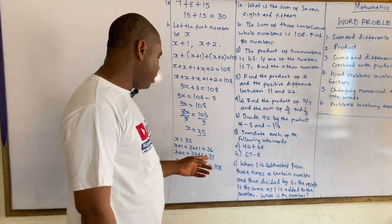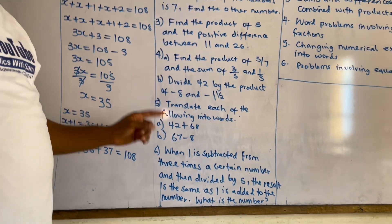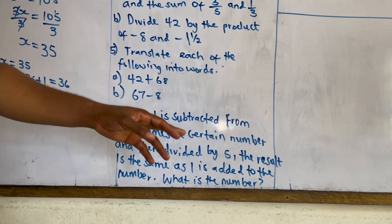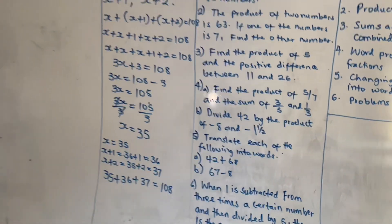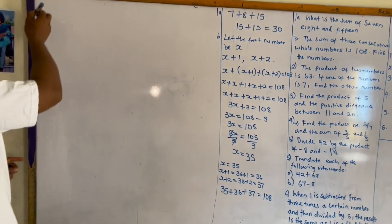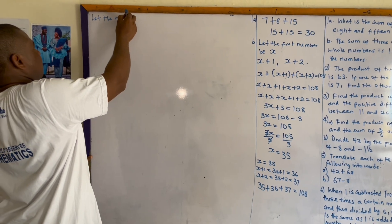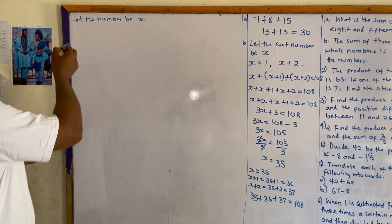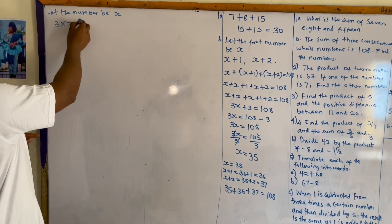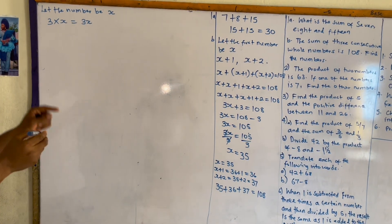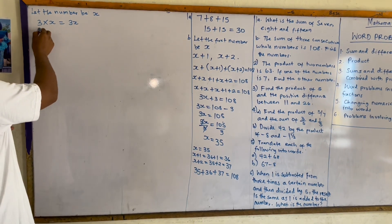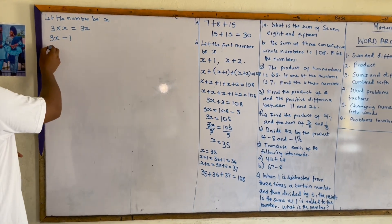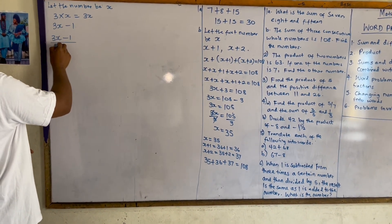For our final example: when one is subtracted from three times a certain number, and then divided by five, the result is the same as when one is added to the number. What is the number? Let the number be x. Three times the number gives us 3x, and one is subtracted from that, giving 3x minus one. Then divided by five, we have (3x minus one) divided by five.